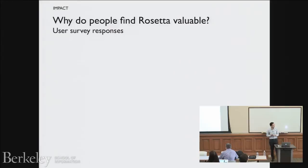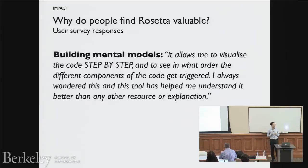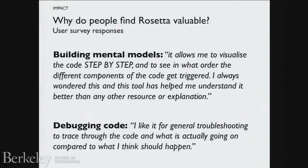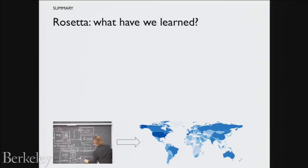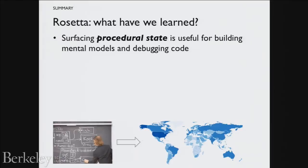Why do people find this useful? Based on server responses and clustering, two high-level use cases emerged. One is building mental models — really seeing what's going on step by step. The second is to debug code — people paste code from their programming assignments, trace it out, and see what's actually going on. In sum, the high-level finding is that surfacing procedural state — surfacing step-by-step what's going on inside of the computer — is useful for both building mental models and debugging.